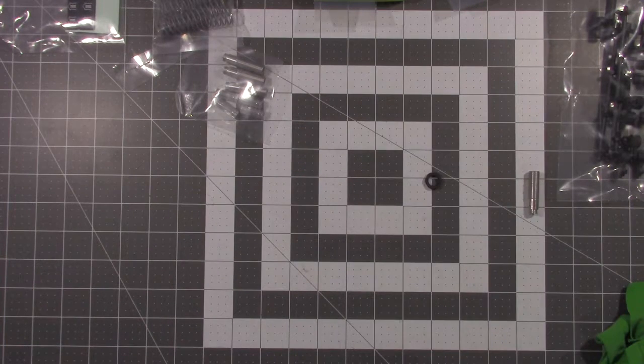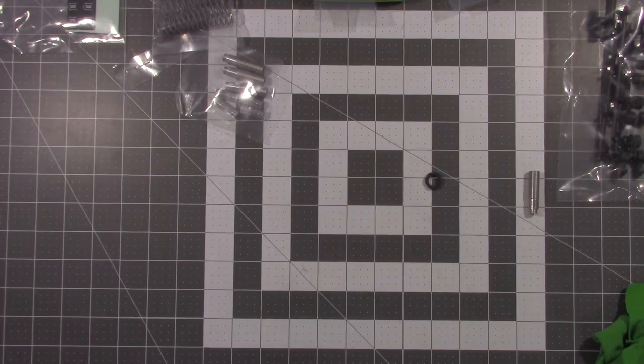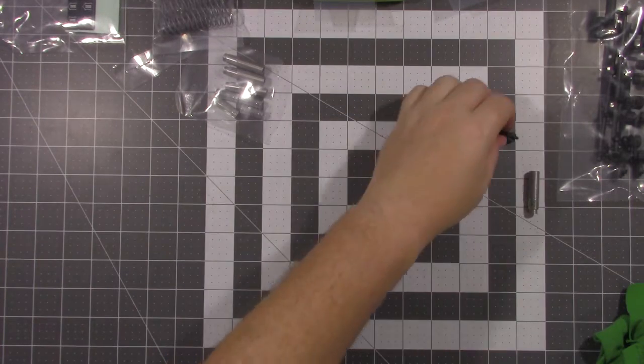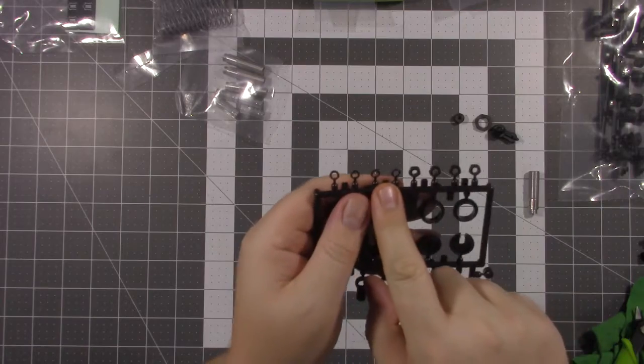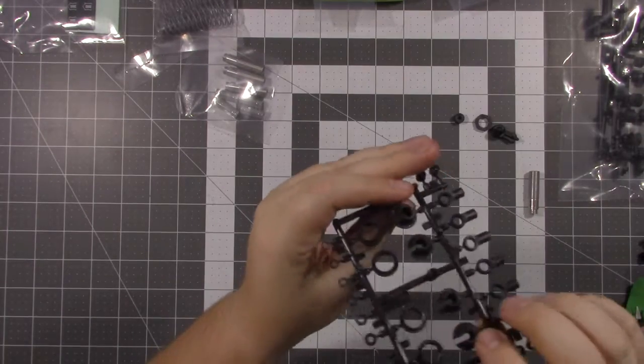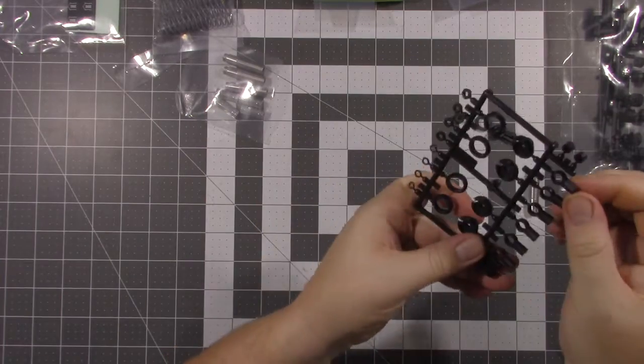You'll need one of the shock bodies, one of the spring tensioning screws, the bottom cap and a top cap, and you're also going to need one of these little plastic washers. It's number four on the plastic parts tree that has the spring retainers and the ball ends.